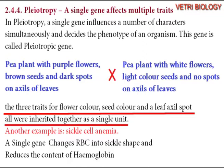three traits — flower color, seed color, and leaf axil spot — were inherited together as a single unit.